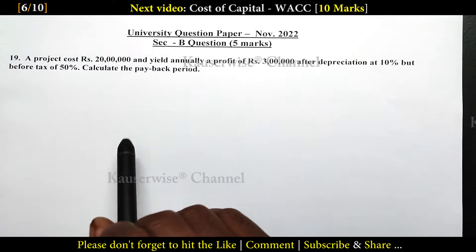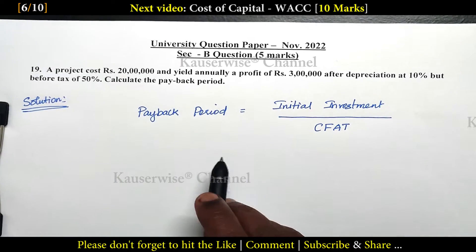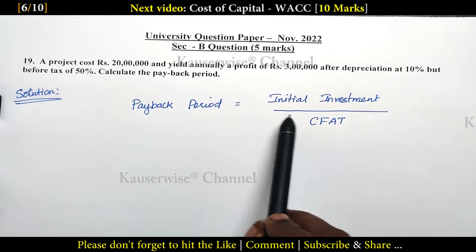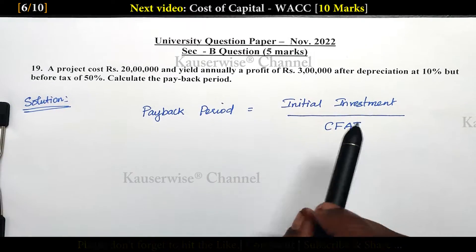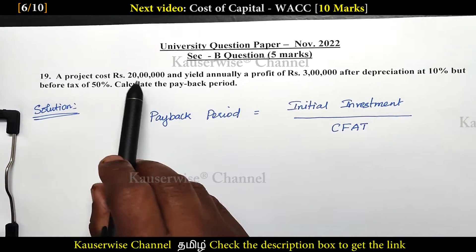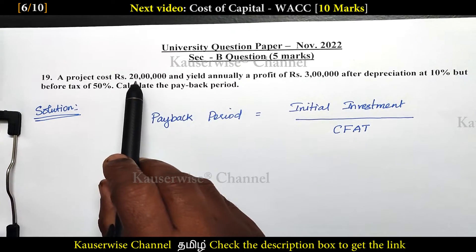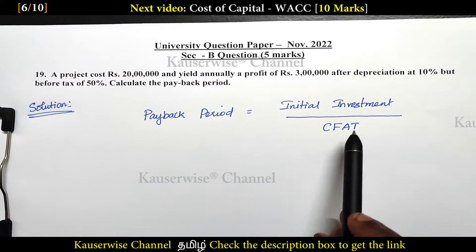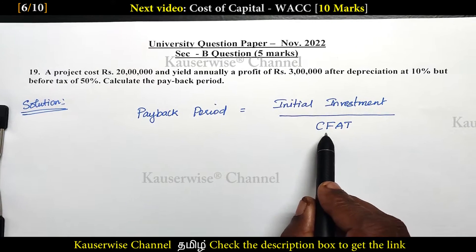Let us see the solution. What is the formula to find out payback period? Initial investment divided by CFAT. The initial investment is given in the problem — a project cost of 20 lakhs. This is the initial investment. Now we need to calculate CFAT.